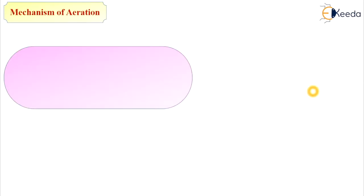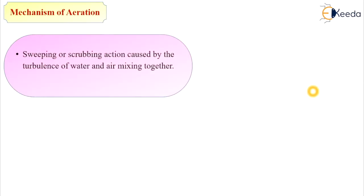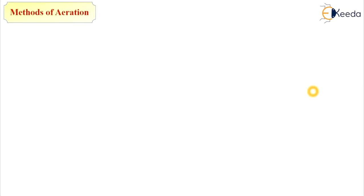Next is the mechanism of aeration. The first mechanism is sweeping or scrubbing action caused by the turbulence of water and air mixing together. Because of aeration, the water becomes turbulent and there is a scrubbing action between water and air when they mix together. The next mechanism is oxidizing certain metals such as iron and manganese, and gases.